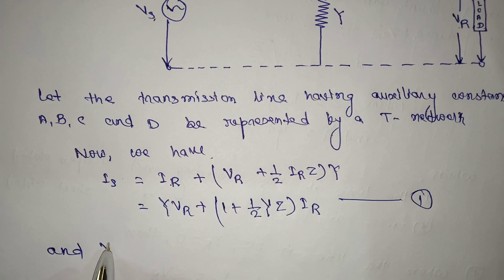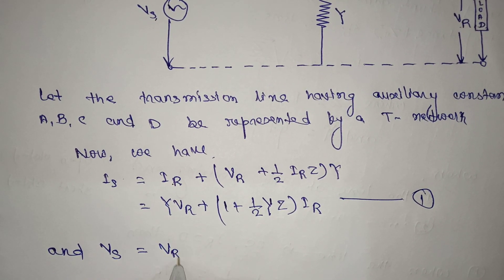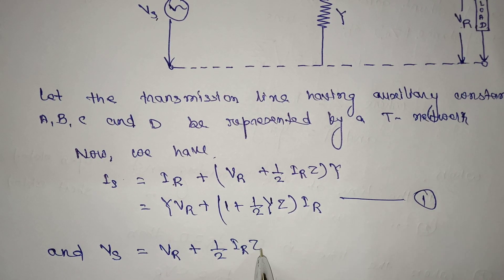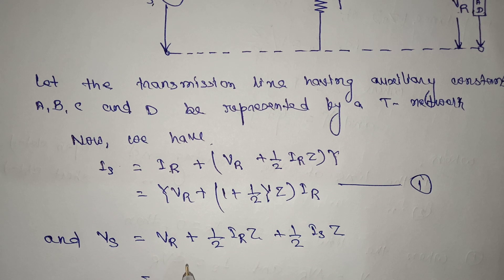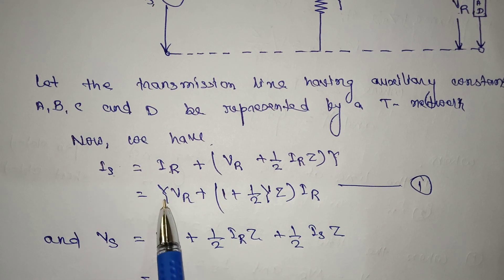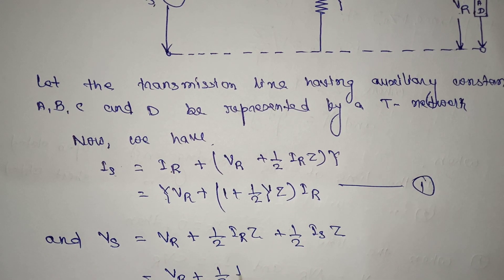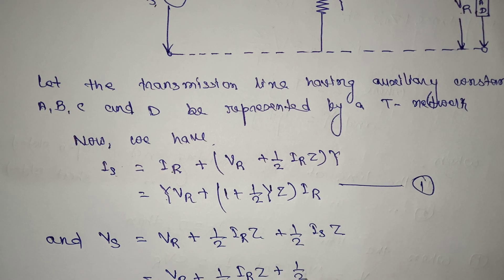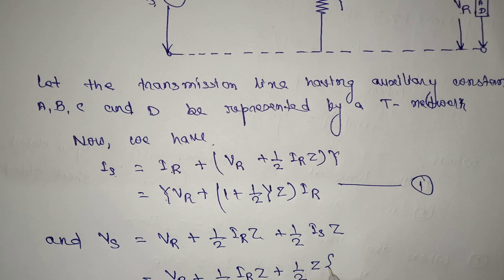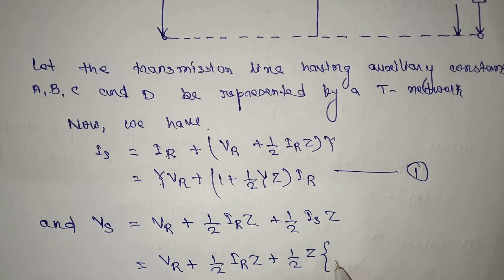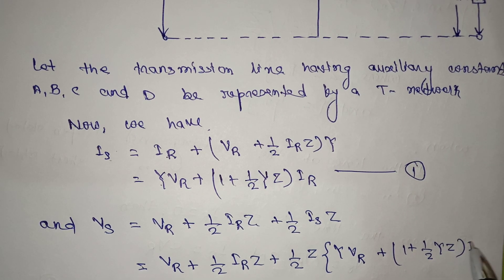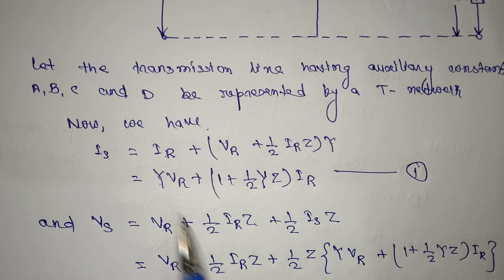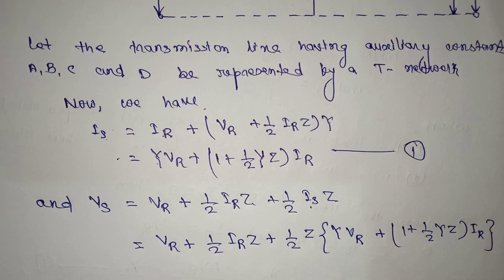The sending end voltage VS is equal to VR + (1/2)·IR·Z + (1/2)·IS·Z. Again we rearrange the equation. We already got IS = Y·VR + [1 + (1/2)YZ]·IR, so we substitute this value of IS directly into the VS equation.